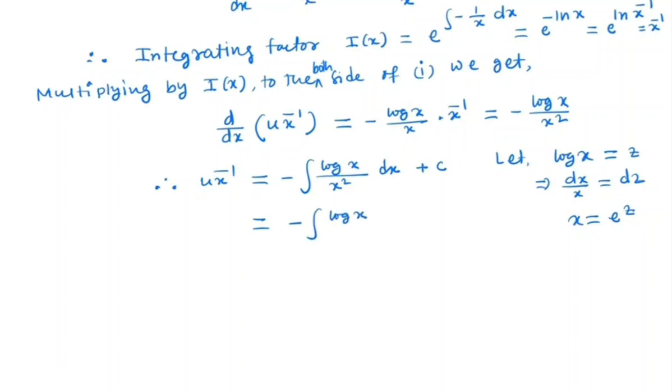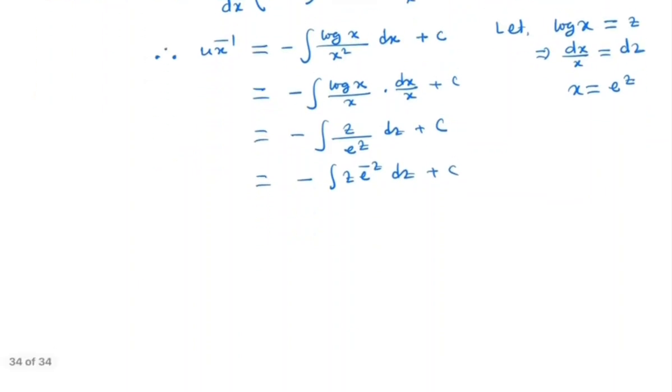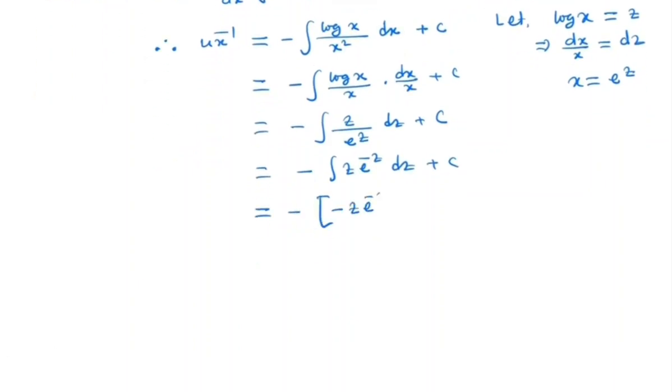So this is -∫(log x)/x · dx/x + c = -∫z/e^z dz + c = -∫z e^(-z) dz + c. This will be -z e^(-z) - ∫e^(-z) dz + c. So this is -z e^(-z) plus, and again integrating, we get -(z+1) e^(-z) + c.